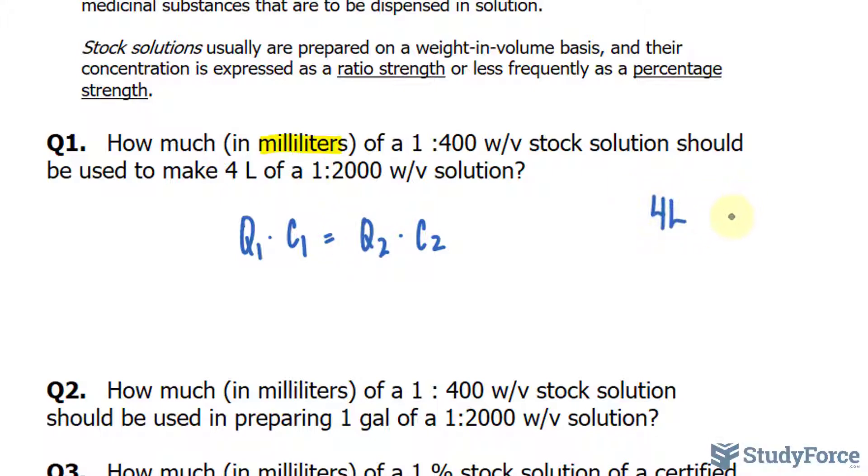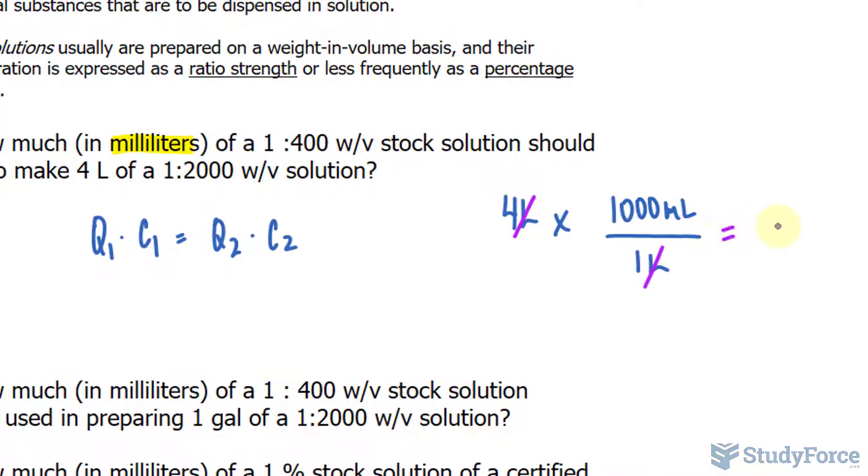So 4 liters made into milliliters goes like this. Remember that there are 1,000 milliliters for every 1 liter. So I'll write down 1,000 milliliters at the top over 1 liter at the bottom. This unit and that unit cancel out, leaving us with 4,000 milliliters. You can convert it any way that you feel comfortable. So I'll replace 4,000 in for Q2.